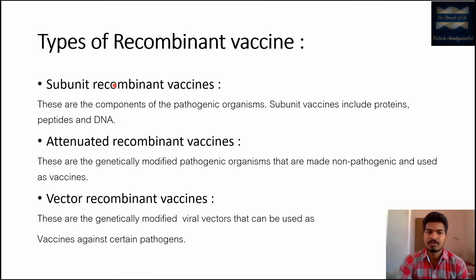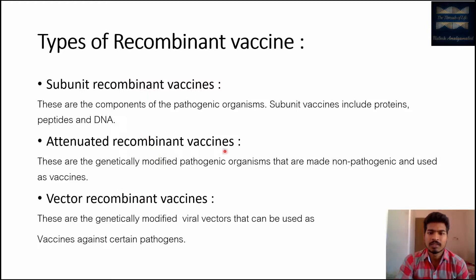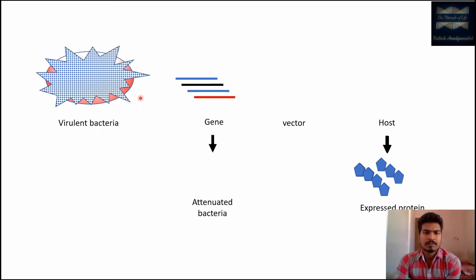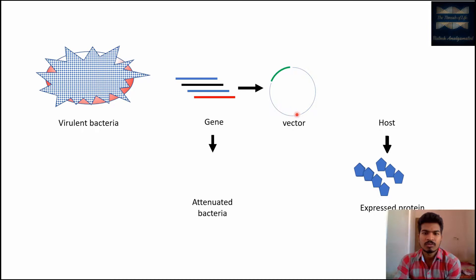There are three types of recombinant vaccines: subunit recombinant vaccine, attenuated recombinant vaccine, and vector recombinant vaccine. In a diagrammatic manner — suppose this is a virulent bacteria which has a number of surface receptors on its surface. We find out that these surface receptors are encoded by a certain segment of DNA. Once we identify that this blue-colored DNA segment encodes the surface receptor, we take it, clone it into a suitable vector, and insert it into an expression vector.